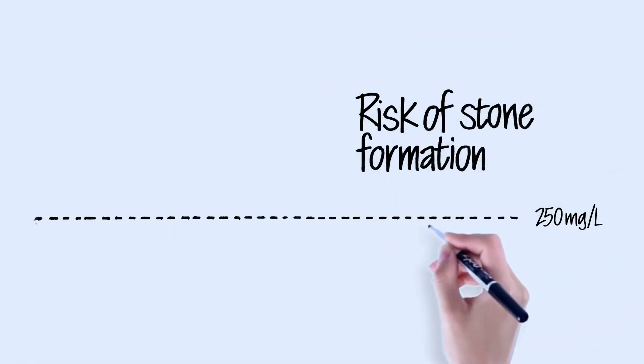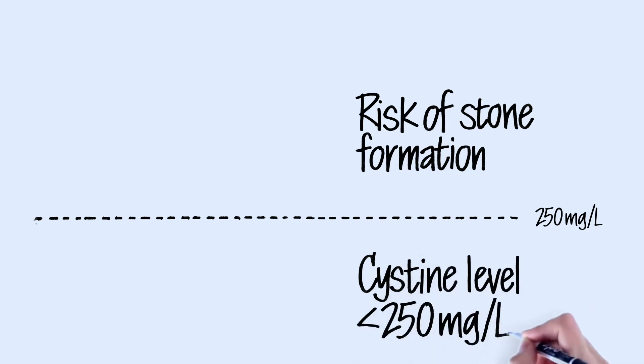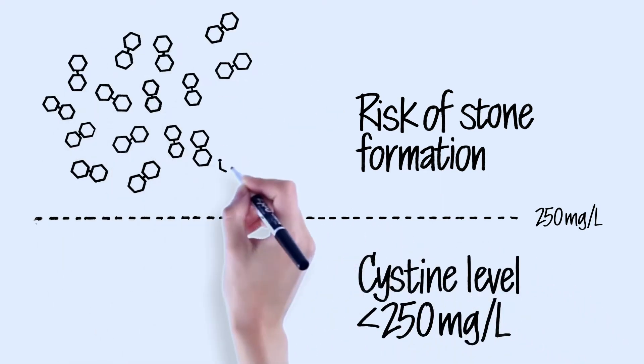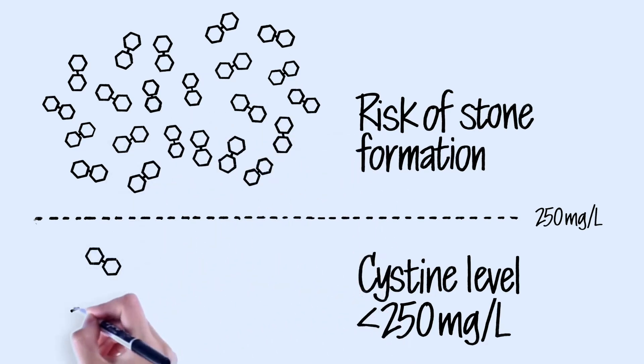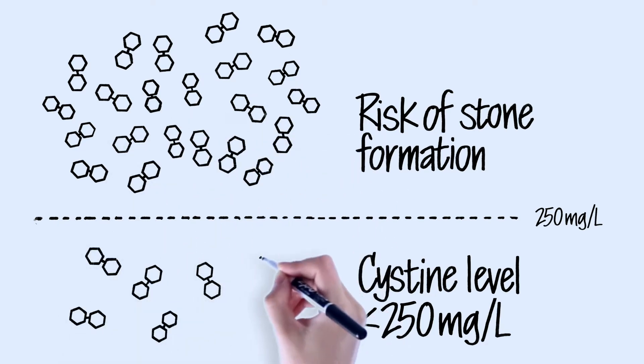The test measures the level of cystine in your urine. Too much cystine in your urine leads to new cystine stones. A concentration of 250 milligrams per liter or higher means you may be at risk of forming new stones.